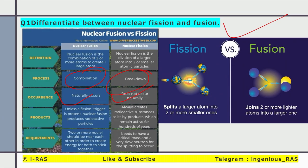So here is the difference. Two or more nuclei should be near each other in order to create energy for both to stick together. Fission needs to have a critical mass and very slow neutrons for splitting to occur. Fission means a big atom dividing into two, and fusion means two atoms combining into one.